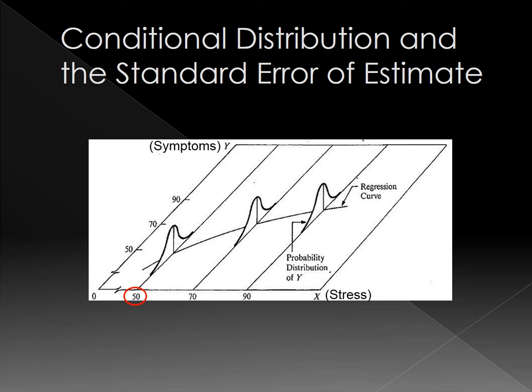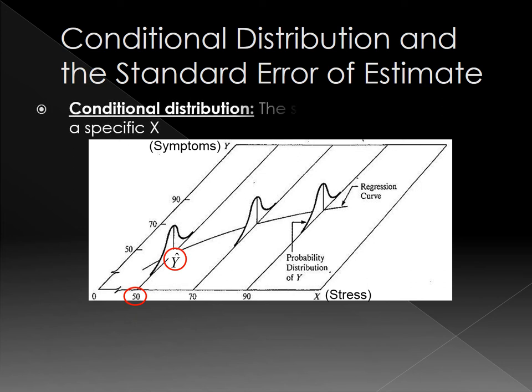Therefore, for students who score 50 at x, there is a distribution of y's. And this is called a conditional distribution. The mean of this conditional distribution is y hat. Conditional distribution refers to the set of y's corresponding to a specific x.